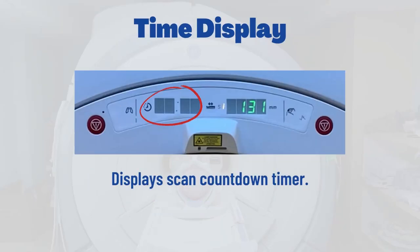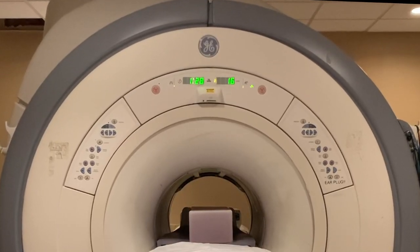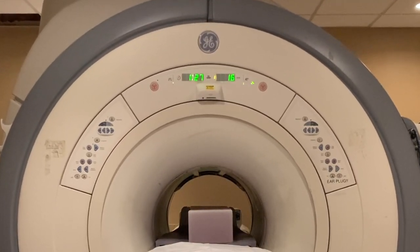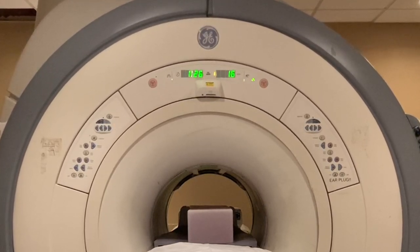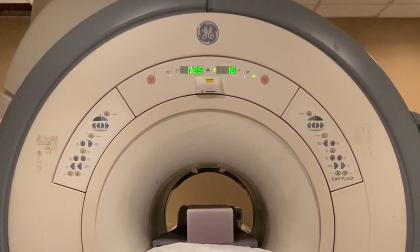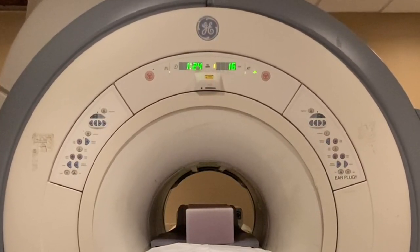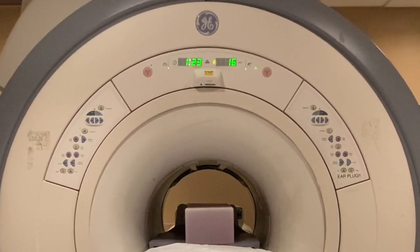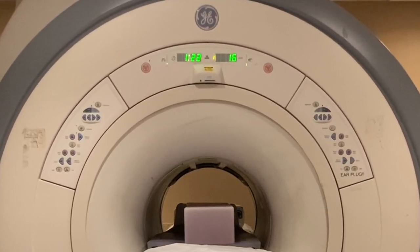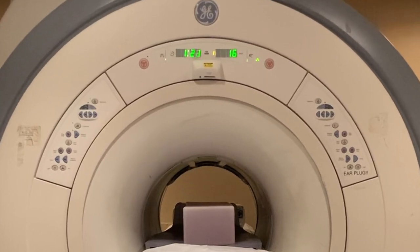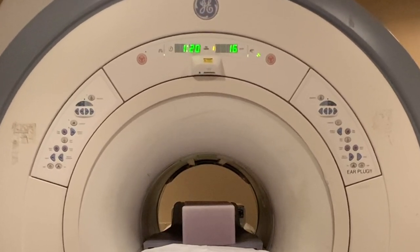Next up is the MRI scan countdown timer. This number appears at the start of the MRI scan sequence and counts down to indicate the duration of the MRI scan series. The MRI scan timer displays the countdown sequence in minutes and seconds.